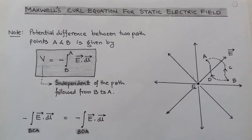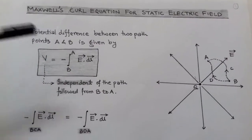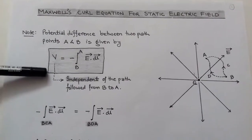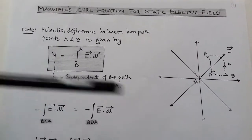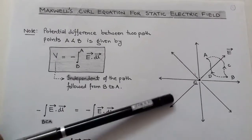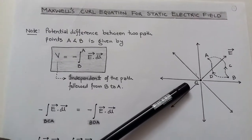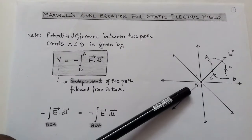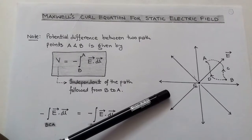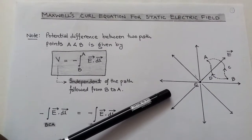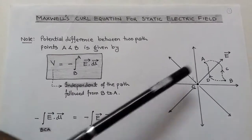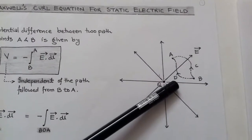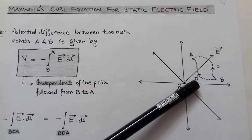The topic is Maxwell's Curl Equation for Static Electric Field. We consider an electric field due to a point charge that is static. The electric field originates from this point charge Q and extends to infinity in all three directions. In this three-dimensional space, where the electric field is E vector, we have to move a test charge from point B to point A.